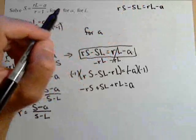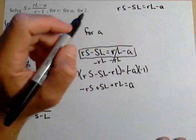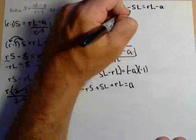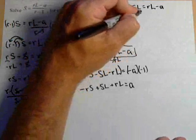Now we do have two L's in there. So we've got to get them on the same side like we had to with the R's. So let's add SL to both sides.